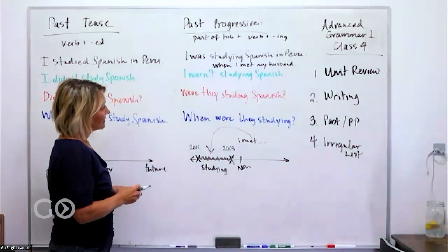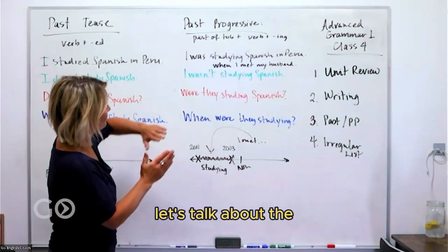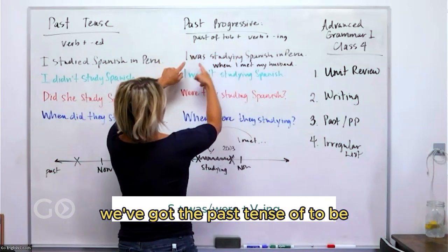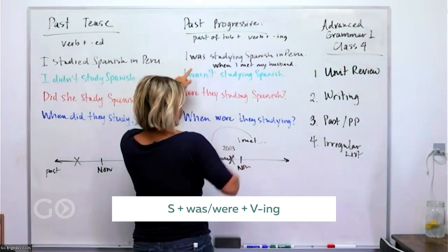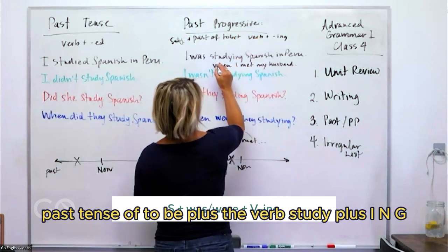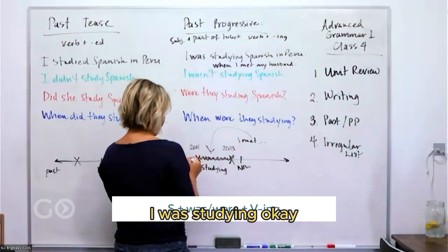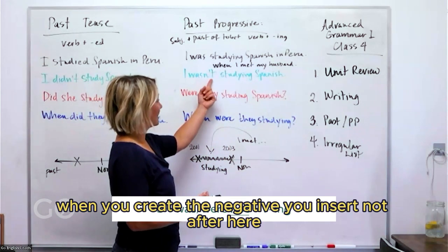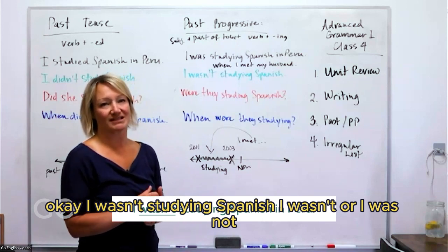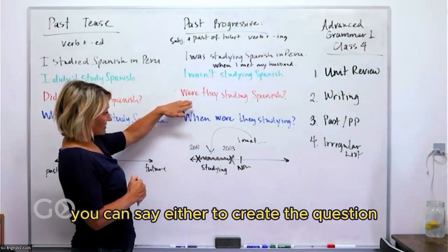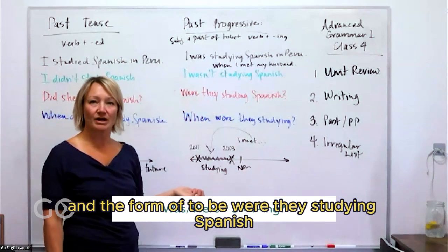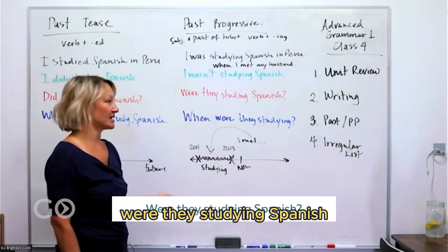Let's talk about the formula. For past progressive: subject + past tense of 'to be' + verb + '-ing.' For example: 'I was studying.' To make it negative, insert 'not' after the verb 'to be': 'I wasn't studying Spanish' — or 'I was not studying.' To form a question, swap the position of the subject and the 'to be' verb: 'Were they studying Spanish?'